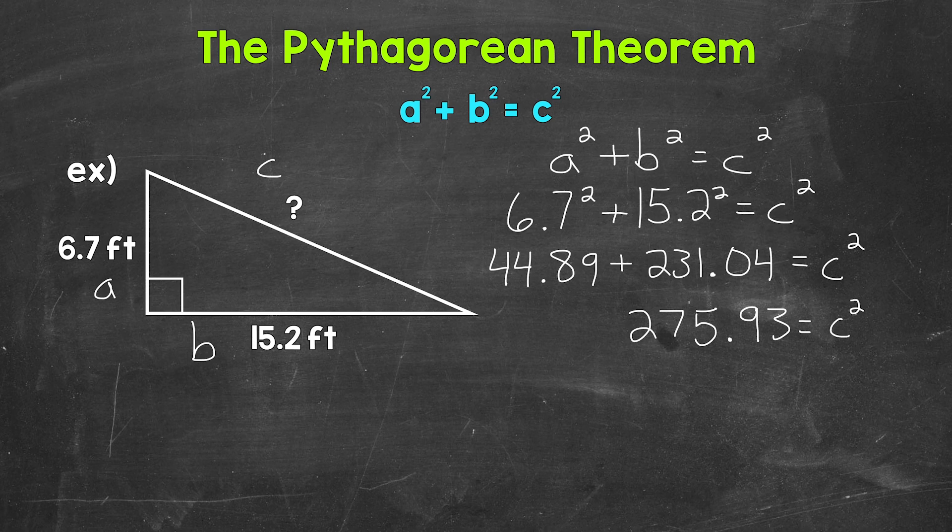Now we need to isolate c and figure out what c equals. Since c is being squared, we can isolate c by taking the square root of c squared. Whatever we do to one side of the equation, we must do to the other. So we need the square root of 275.93 as well.